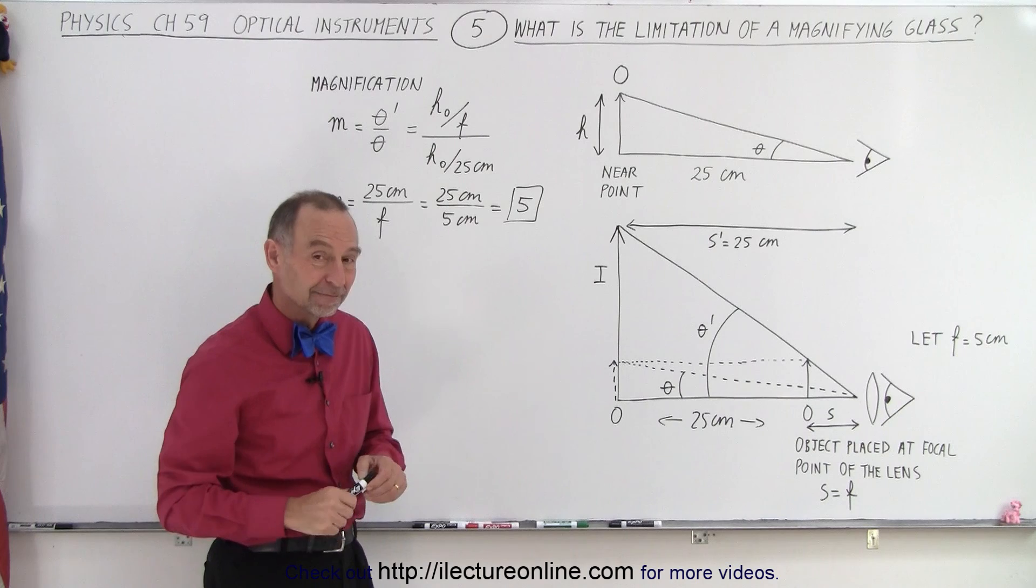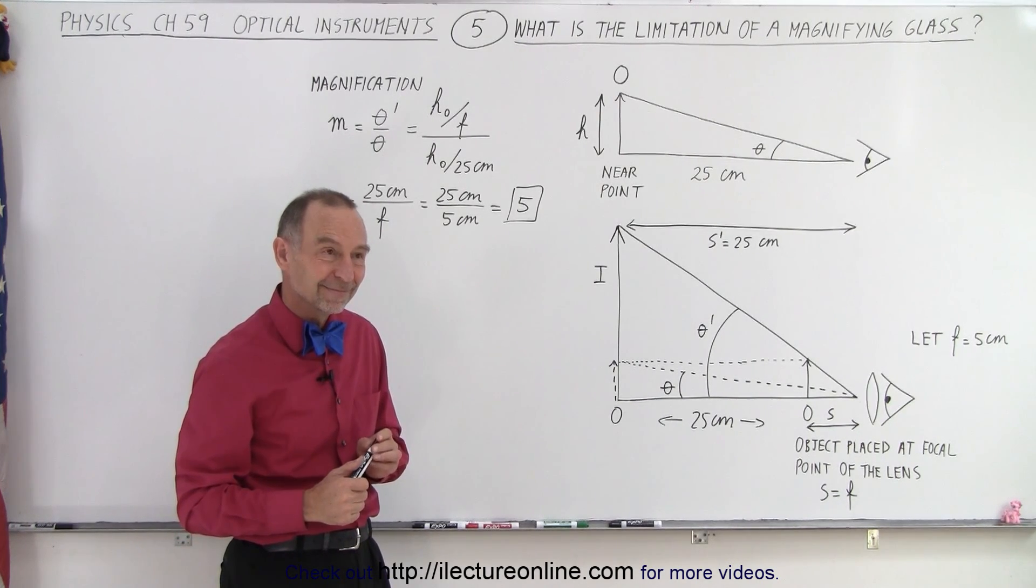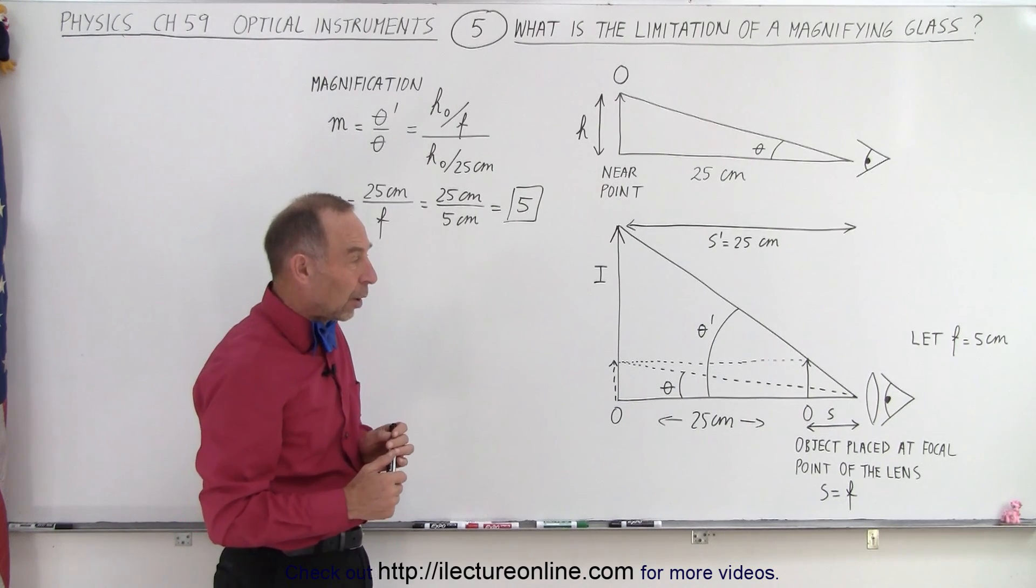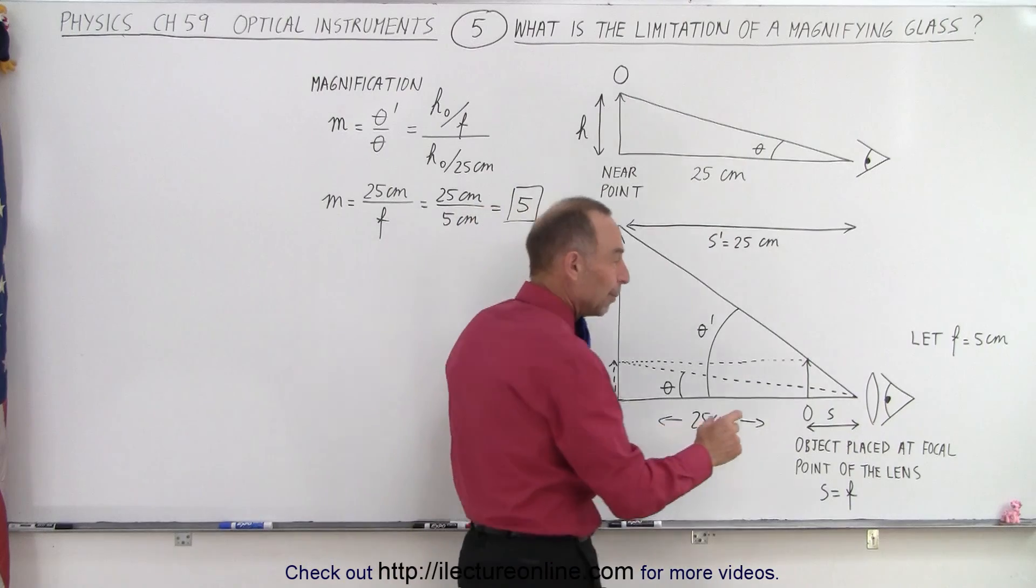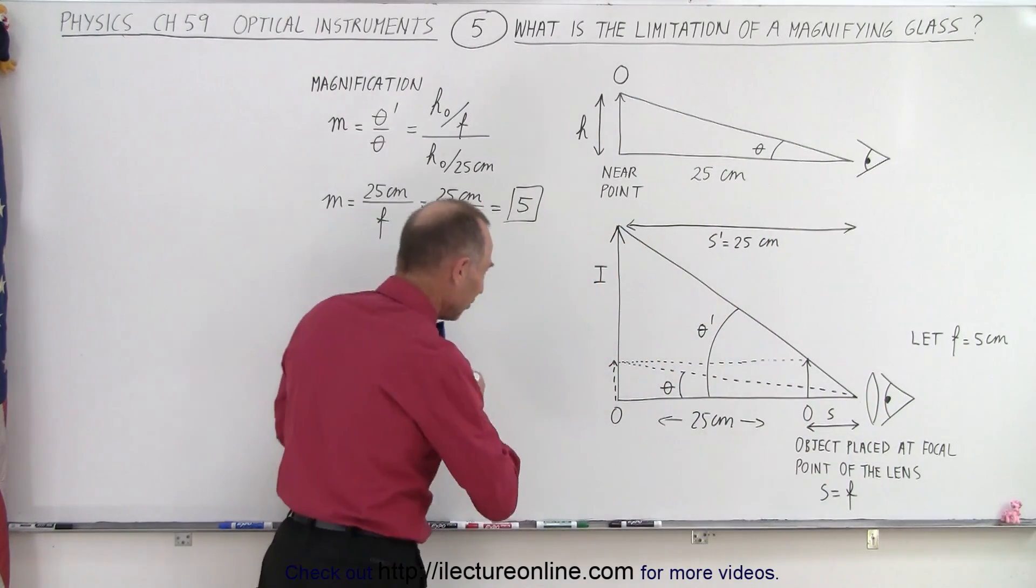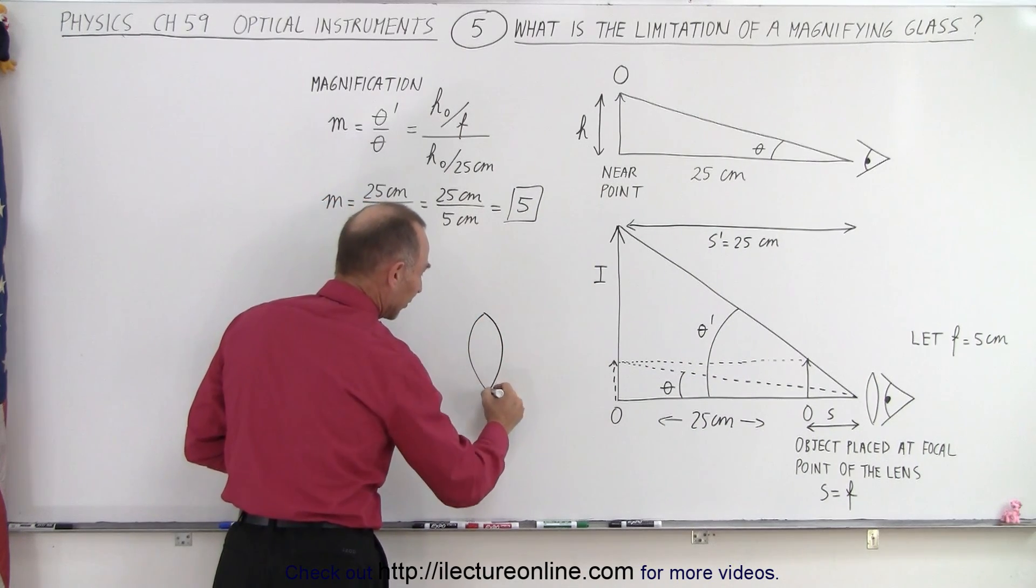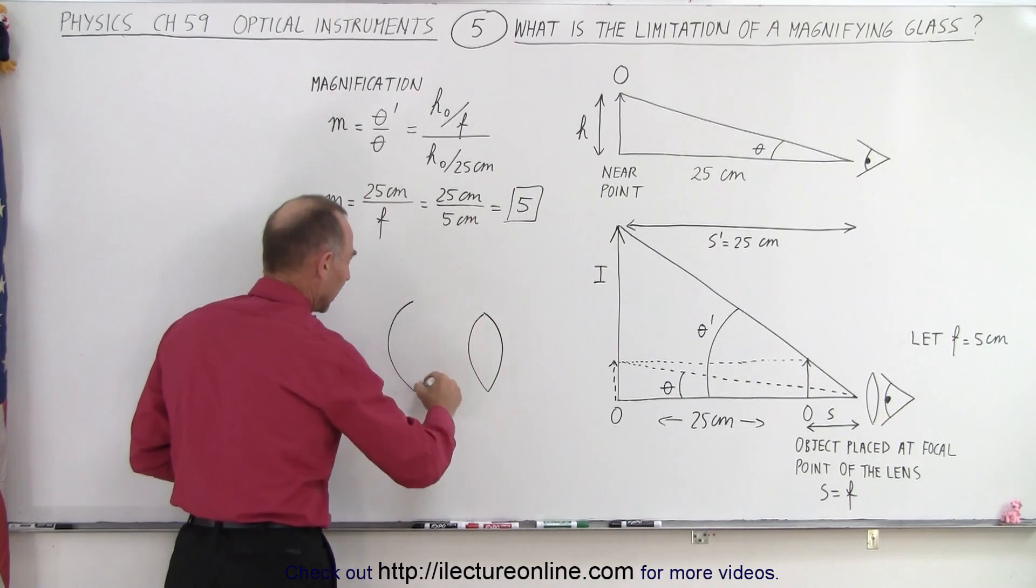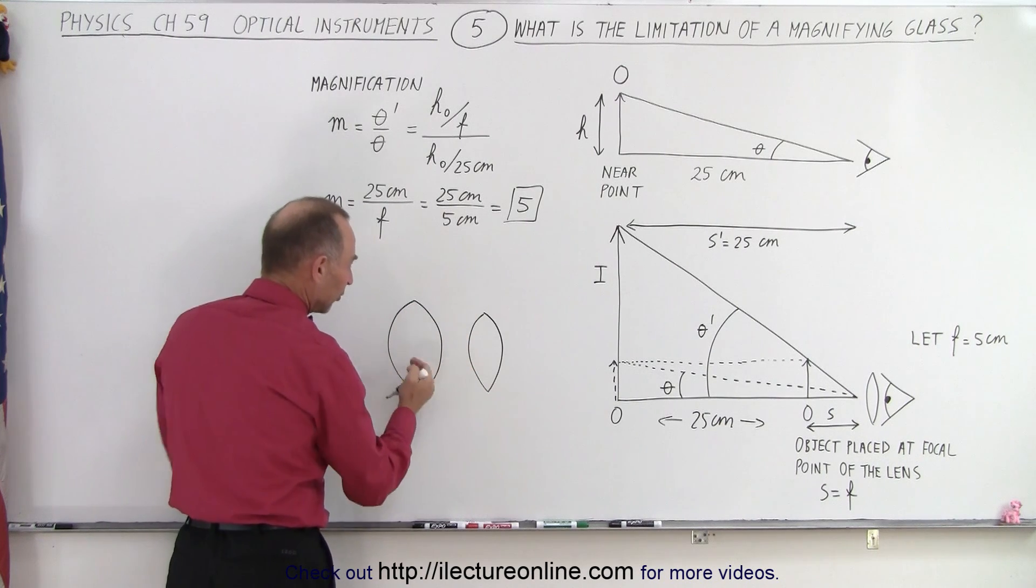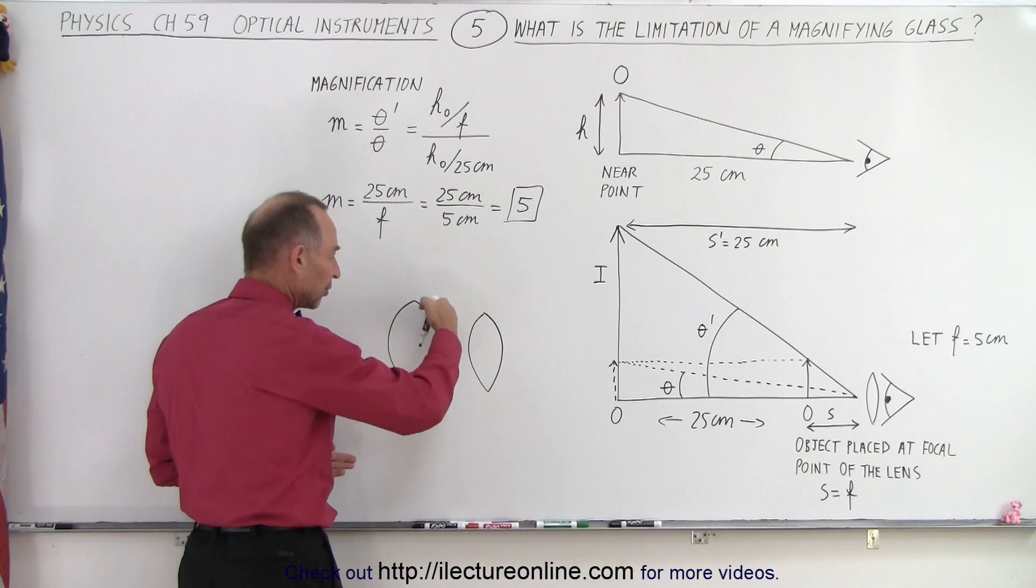Student question: The magnifying glass needs to be bigger as the focal length gets smaller? Instructor: Okay, when you say bigger, actually what happens is as the focal length gets smaller, the lens becomes more bulgy like that. It bulges more and more. And the problem is when you begin to bulge the lens like that, it is hard to get the same magnification across the lens.